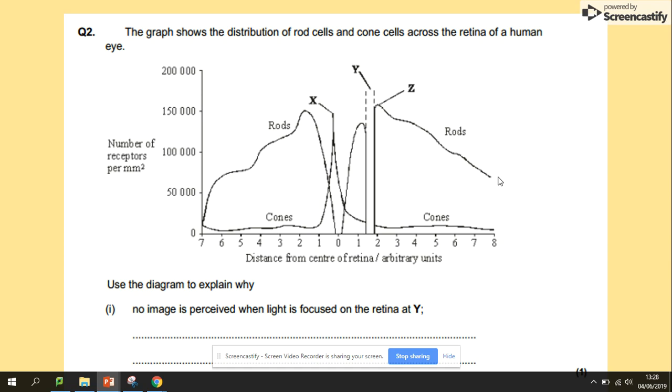The final typical question says there is no image produced at point Y. And as you can see here, what's missing: we don't have any photoreceptors, any cone cells or any rod cells, because this gap here at point Y is completely empty. We don't have any lines for cones or rods.